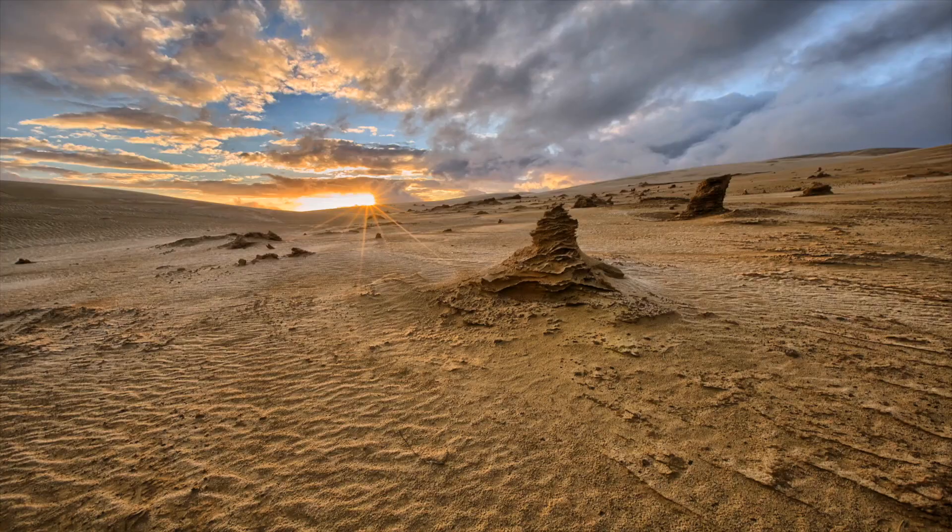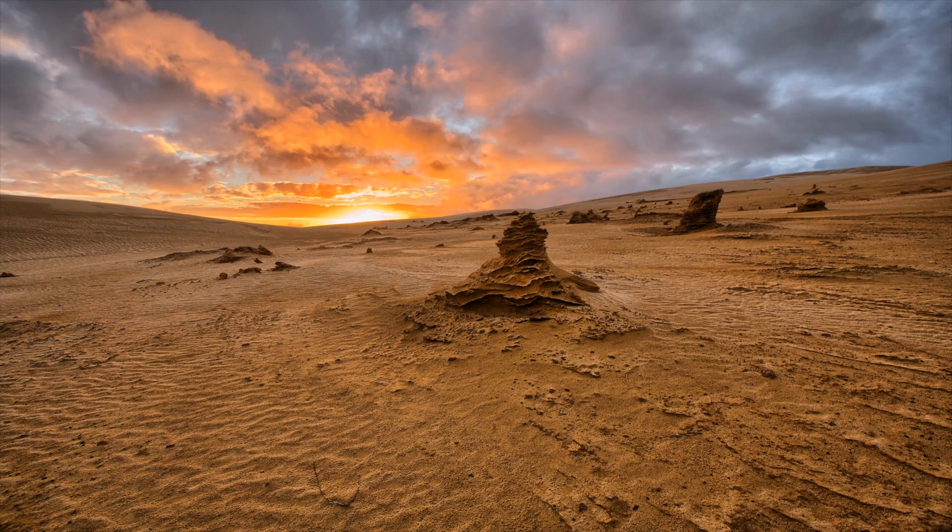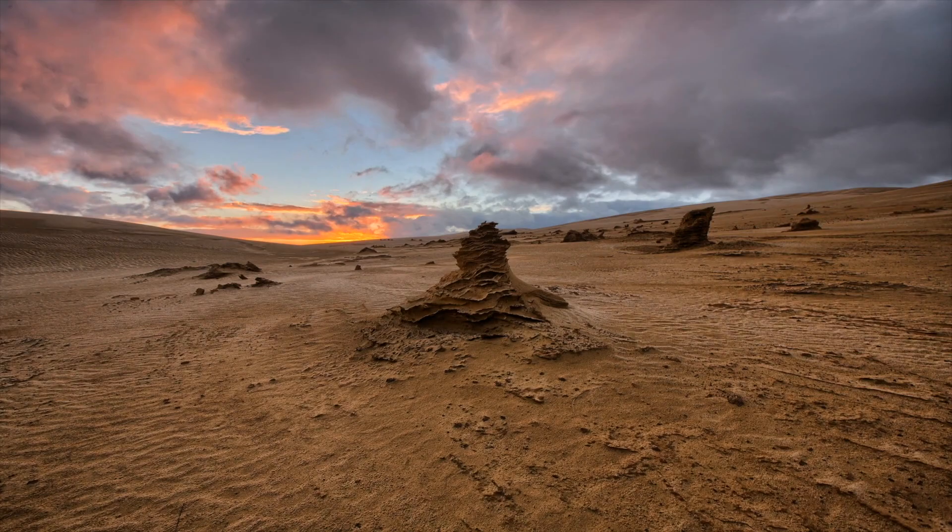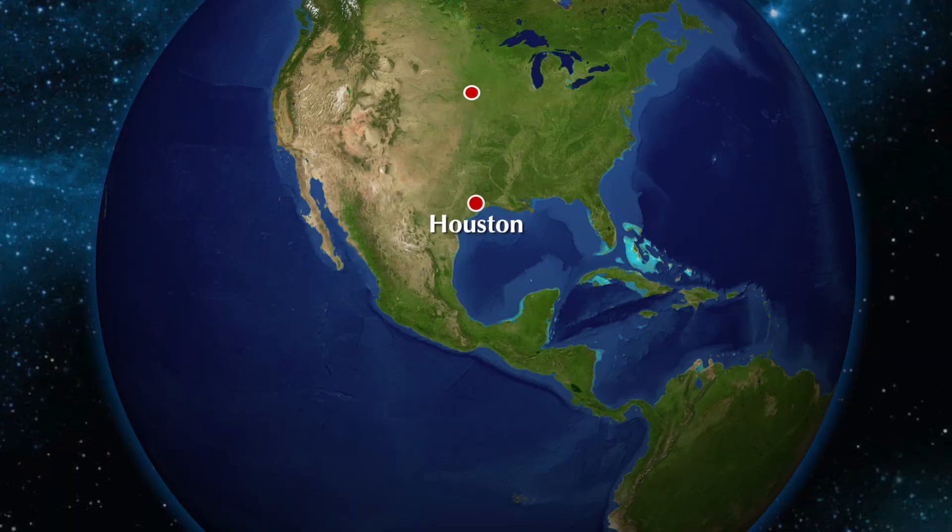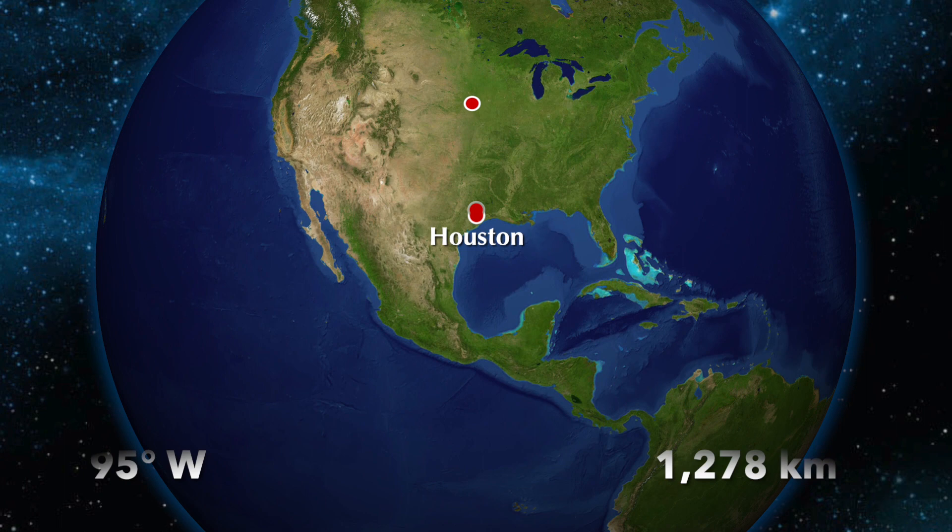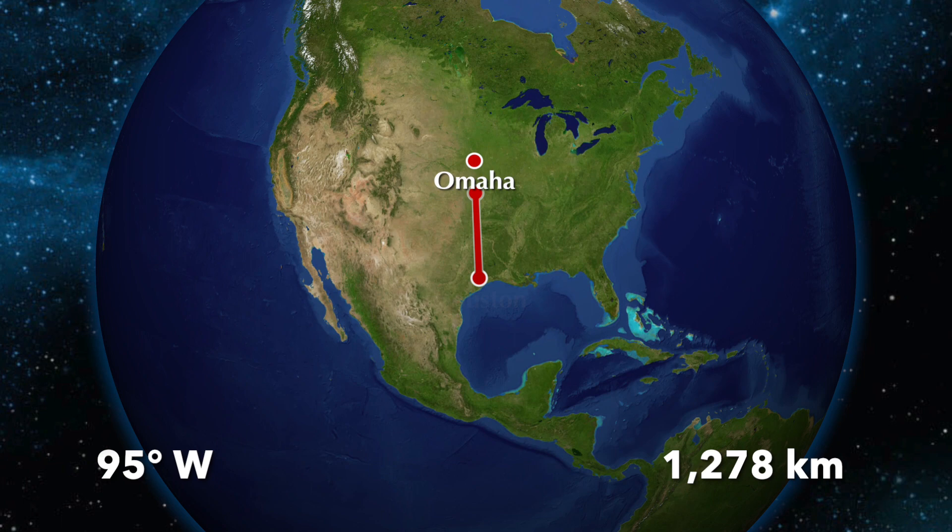It is still possible to calculate earth's circumference with those locations, but it would have been more complicated. Despite these discrepancies, with better inputs we can use the same method to calculate earth's circumference. First, find two cities located at the same longitude. For this example we'll use Omaha, Nebraska and Houston, Texas. The distance between these cities is 1278 kilometers.